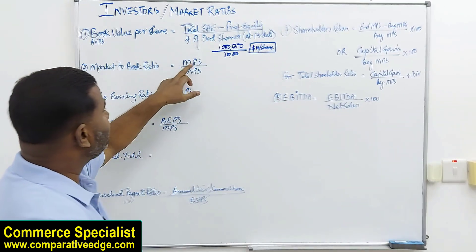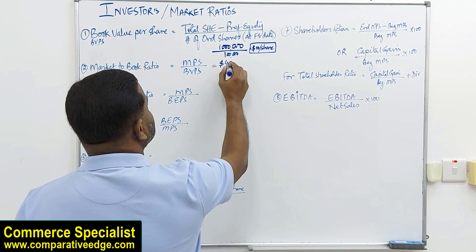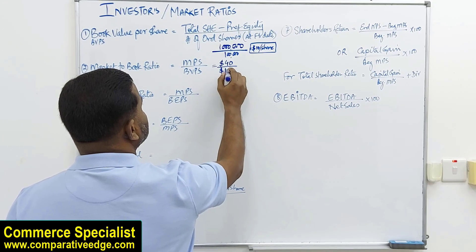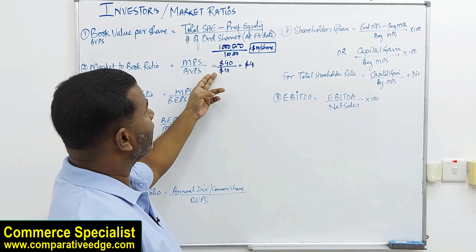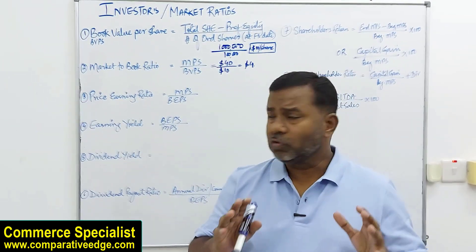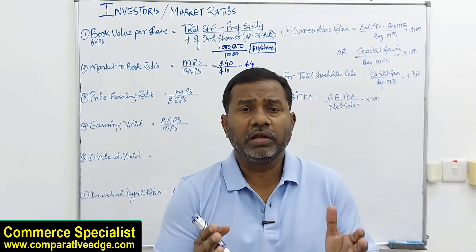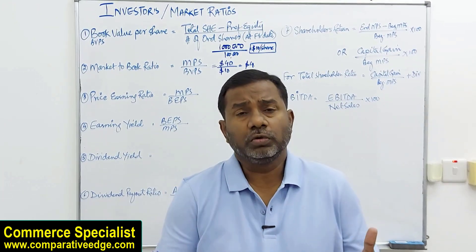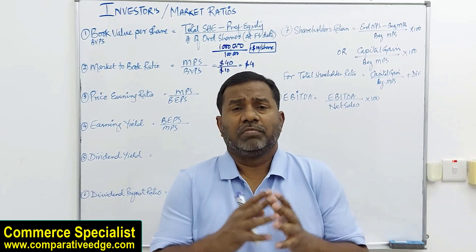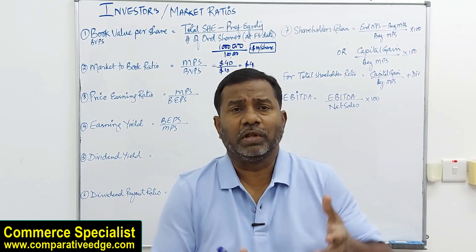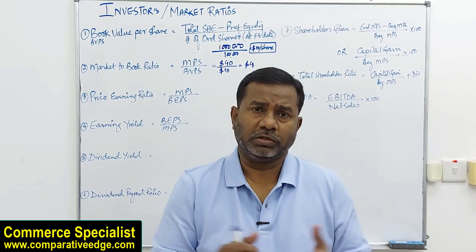The next important ratio is market to book ratio: market price per share divided by book value per share. Assuming market price is $40 and book value per share is $10, the result is 4. If the market to book ratio is more than one, the market expects higher earnings in future from this company. If it's less than one, the market does not expect the company to perform well in future.